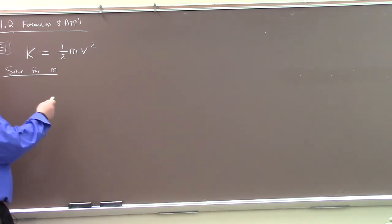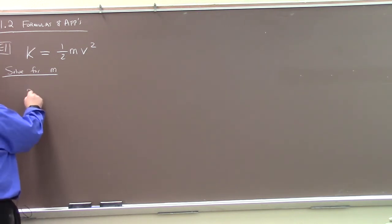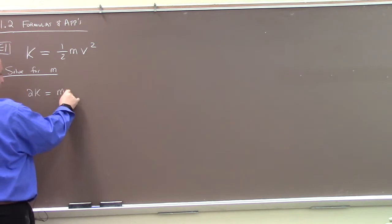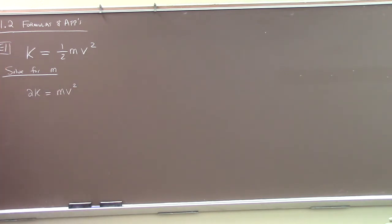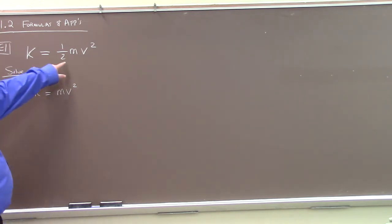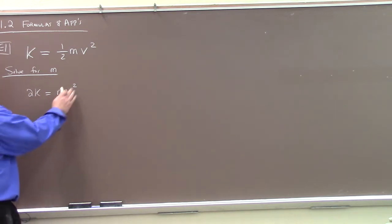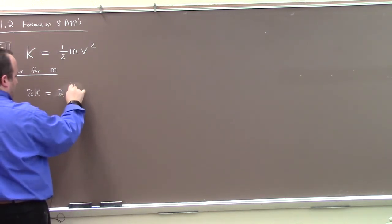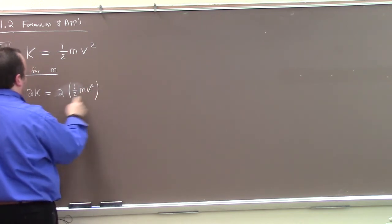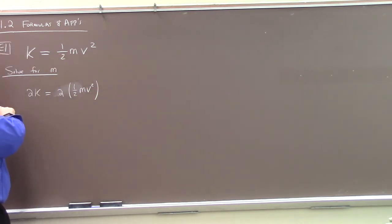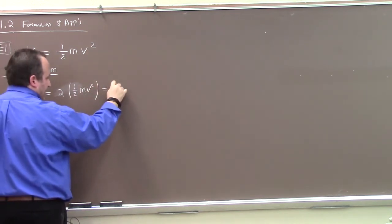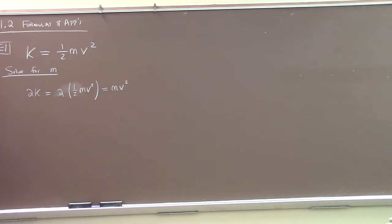We multiply both sides by two, so we have 2K equals mv squared. The step I didn't write down is two times one-half mv squared — multiply the equation by two on both sides. The two and the half cancel, and we get mv squared. So to solve for m, I just need to divide.